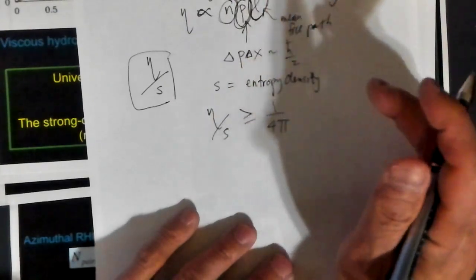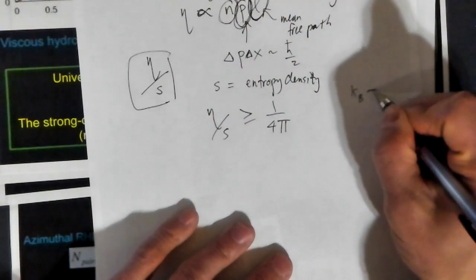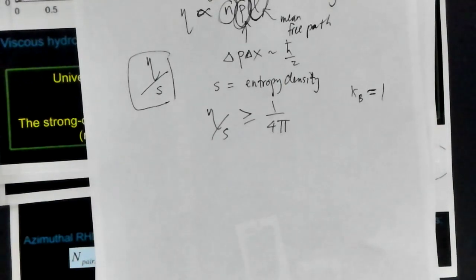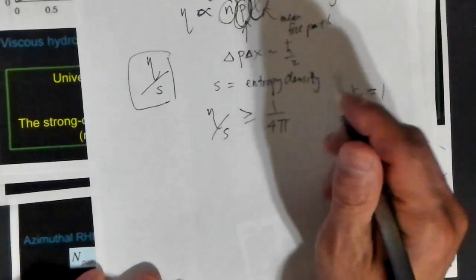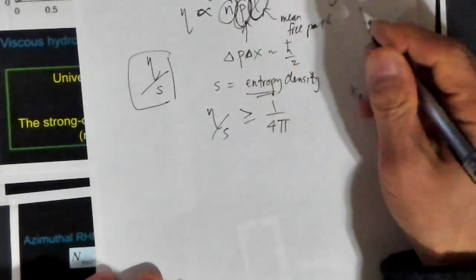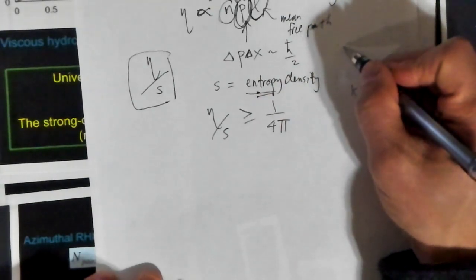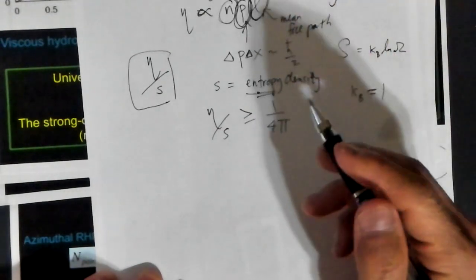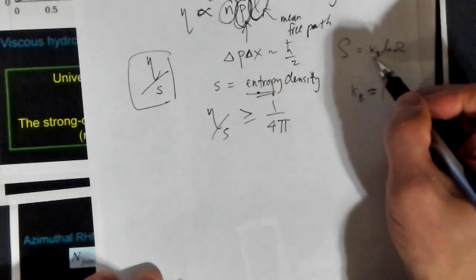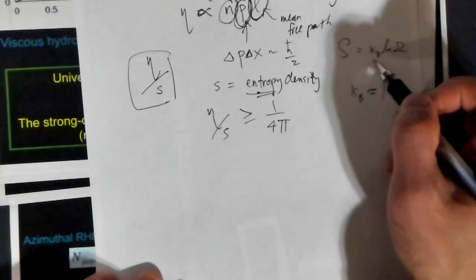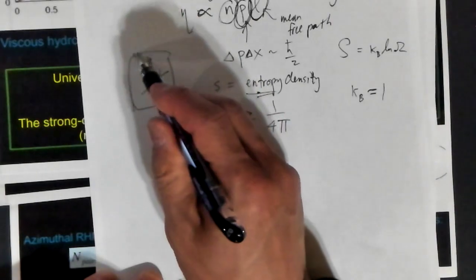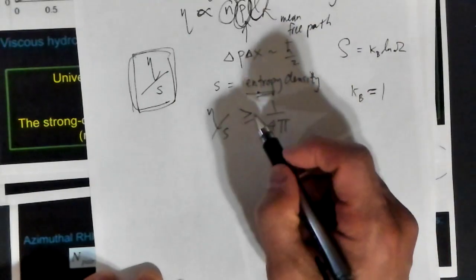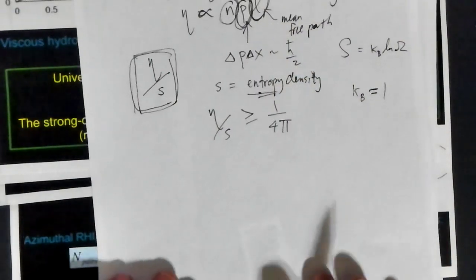This entropy density, entropy capital S is k Boltzmann times the log of the number of quantum states. The entropy density is just how much entropy you have per unit volume. The idea is that eta over S, in units where k Boltzmann is equal to 1, cannot be less than 1 over 4 pi.